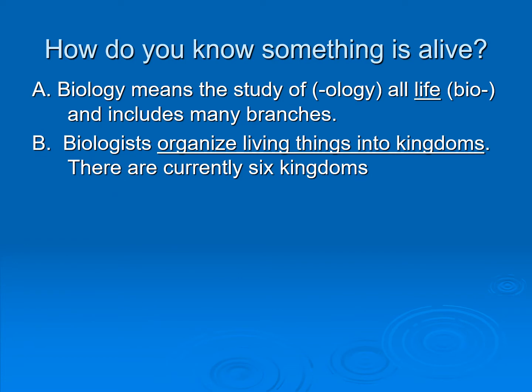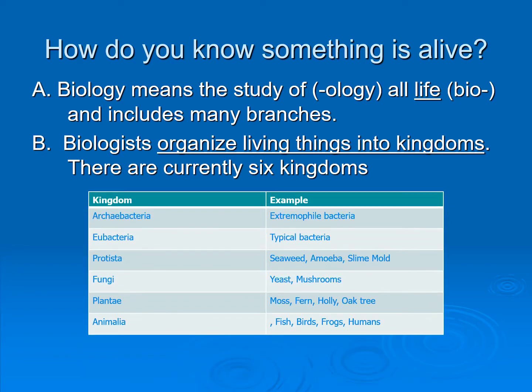Biologists organize living things into kingdoms, and there are currently six kingdoms. We have the Archaea bacteria — an example is your extremophile bacteria. Those are special bacteria found in deep ocean vents that live at extreme temperatures. Thus the name extremophile: 'extreme' and 'phile' means love. They live in extreme situations and fall into the kingdom of Archaea bacteria.